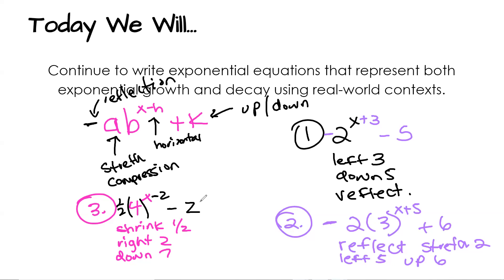Most of the time the only thing people mess up is the left-right direction. So just remember: if it's going to the right, it's going to be minus. If it's going to the left, it's going to be plus. The direction in the exponent is opposite to what you might expect.